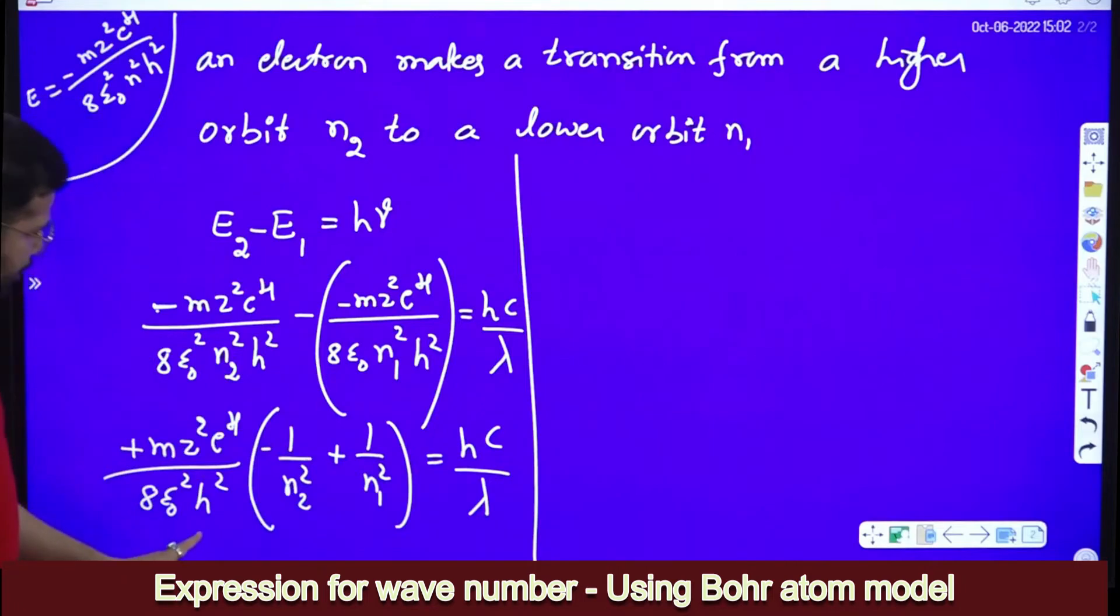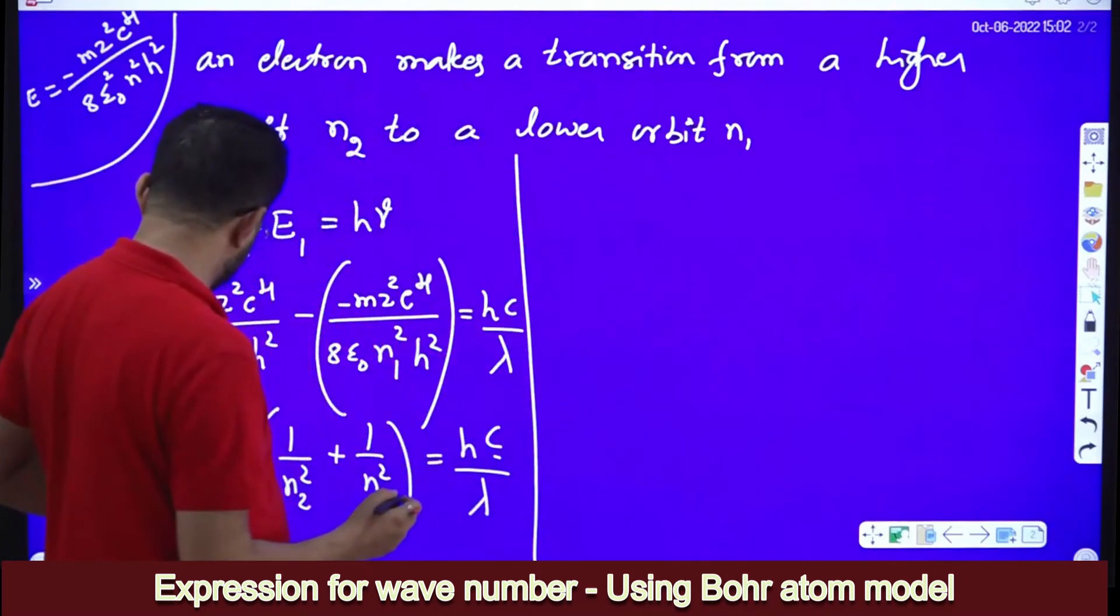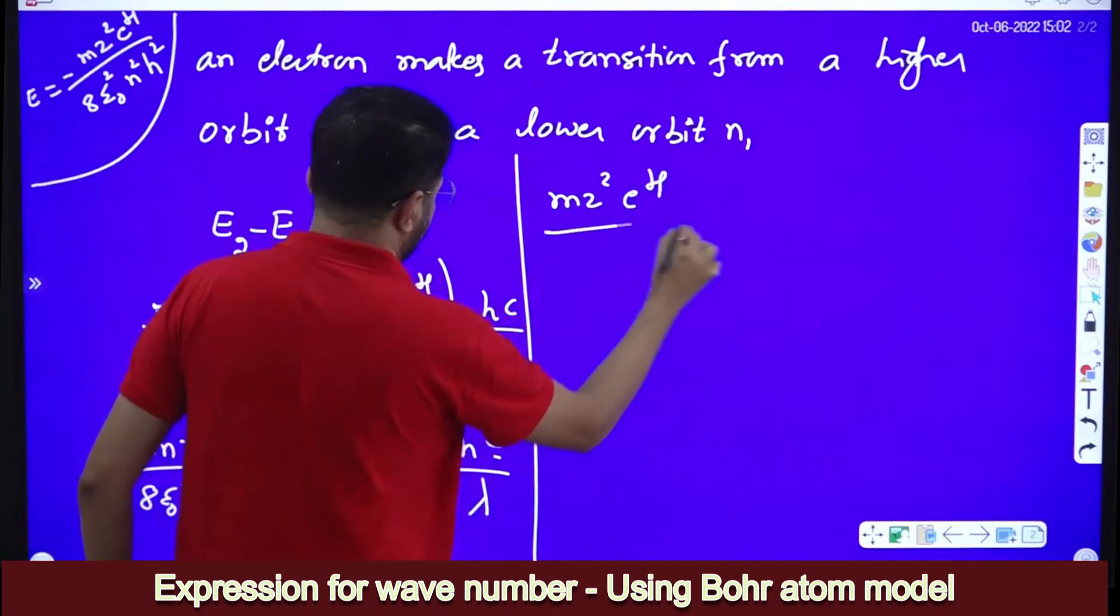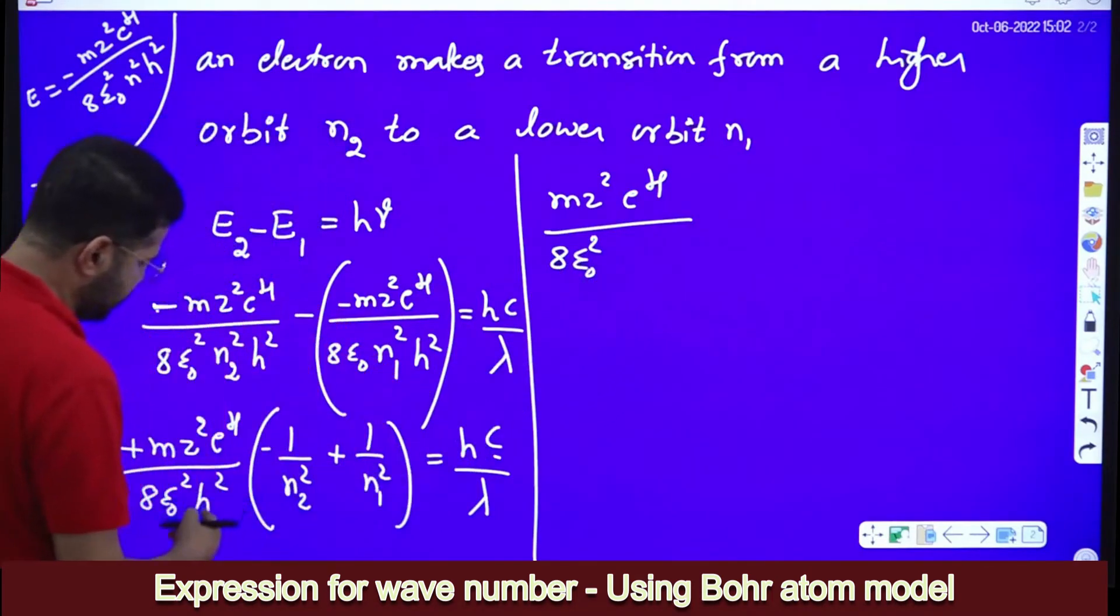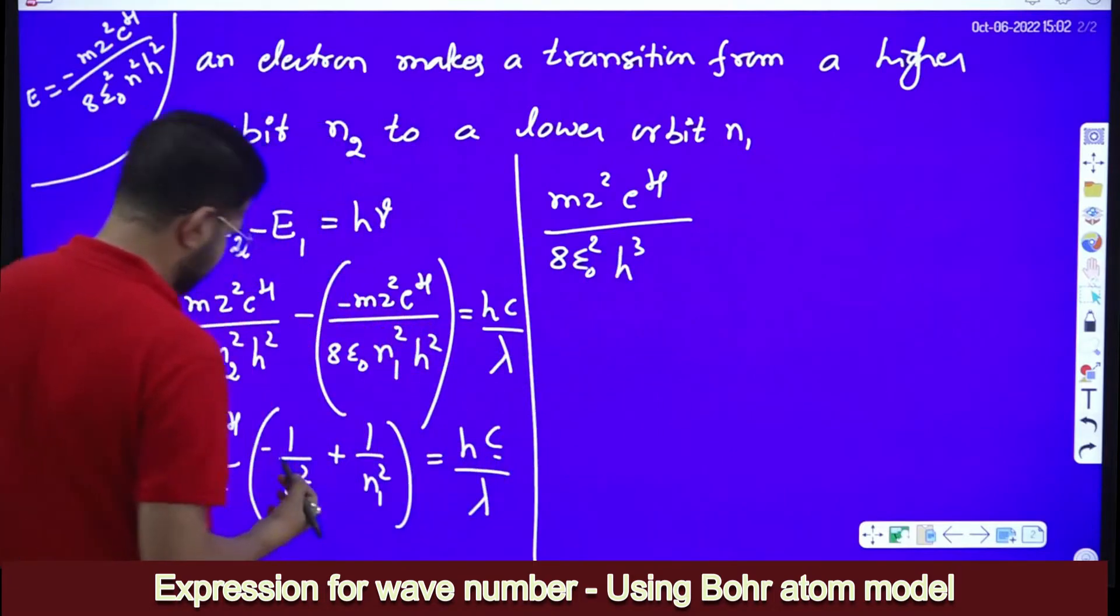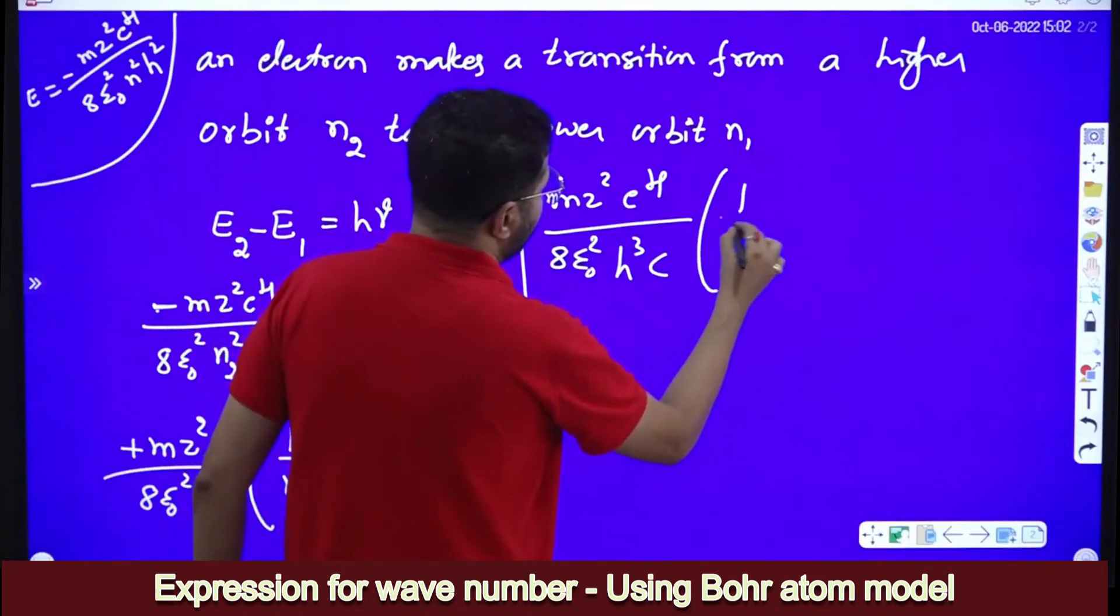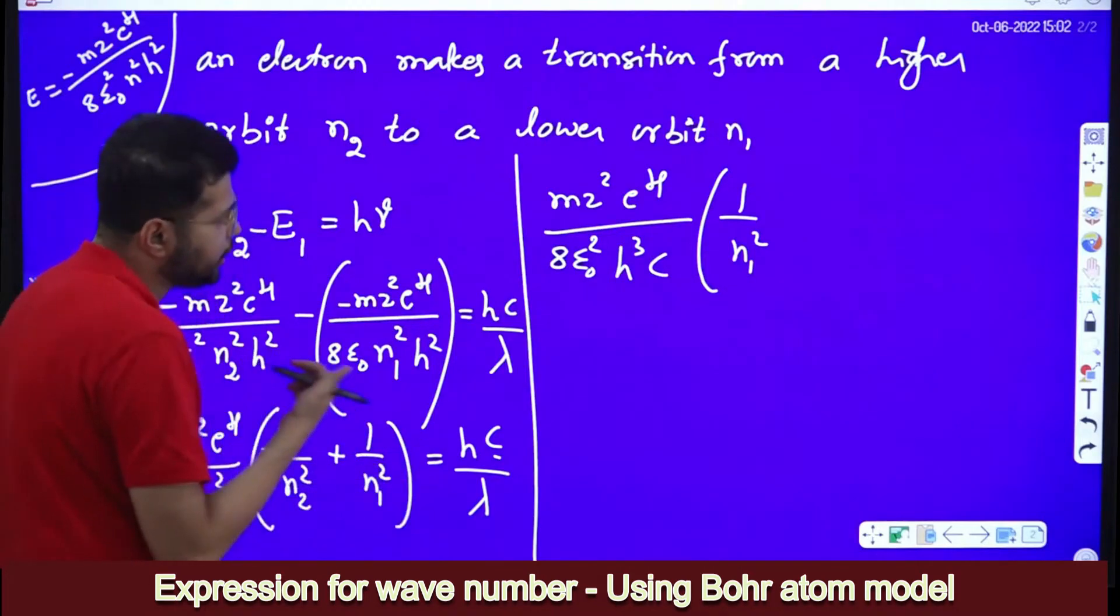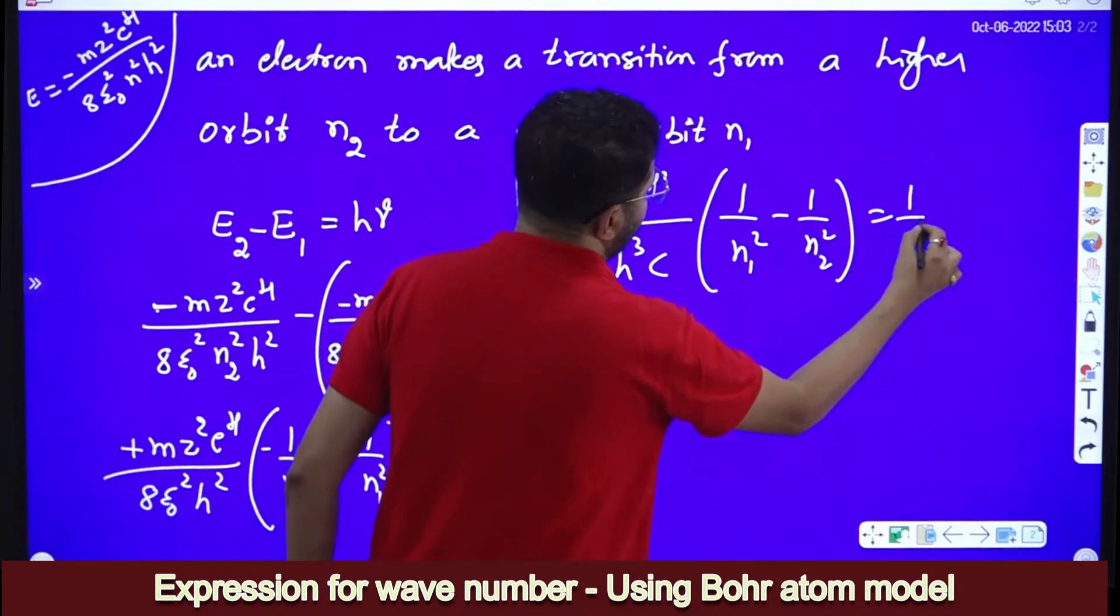Now we will simplify this. H will come to the denominator, C also will come to the denominator. I will write M into Z square into E power 4 divided by 8 epsilon naught square h cube and this C also comes here into C into 1 by N1 square. I will interchange these two terms, because it is addition, minus 1 by N2 square is equal to 1 by lambda.